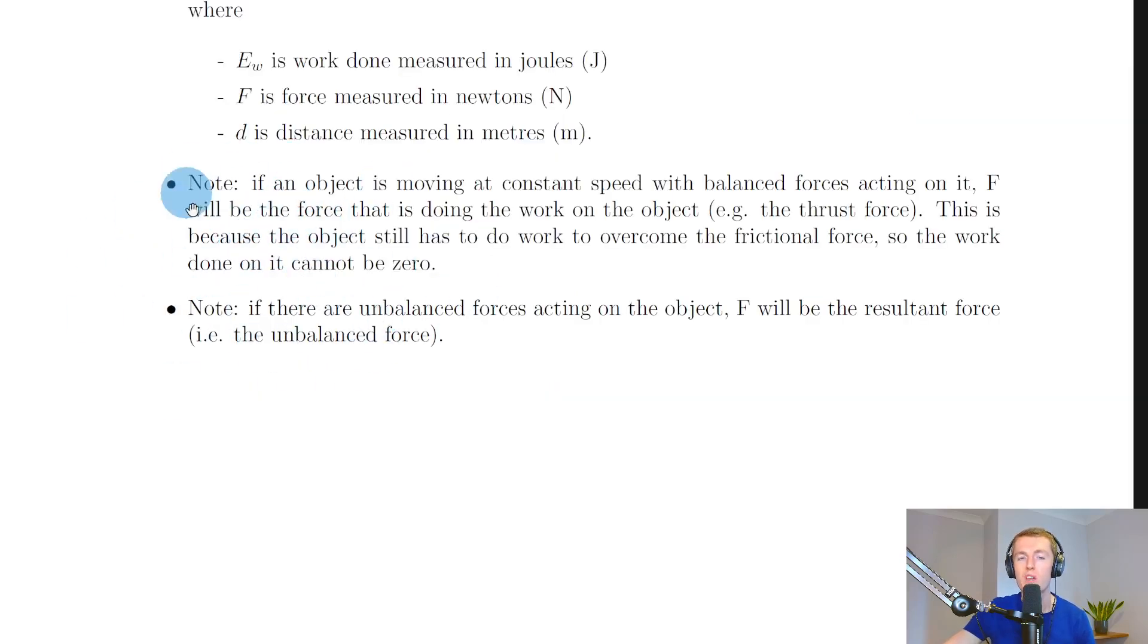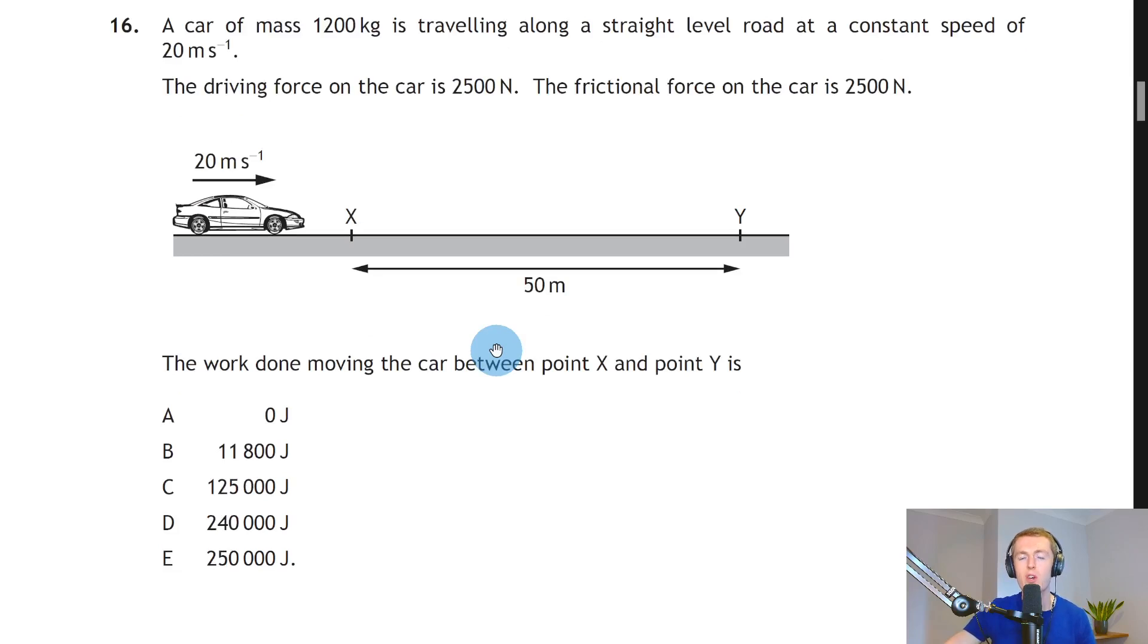Note that if an object is moving at constant speed with balanced forces acting on it, F will be the force that is doing the work on the object, for example the thrust force. This is because the object still has to do work to overcome the frictional force, so the work done on it cannot be zero.